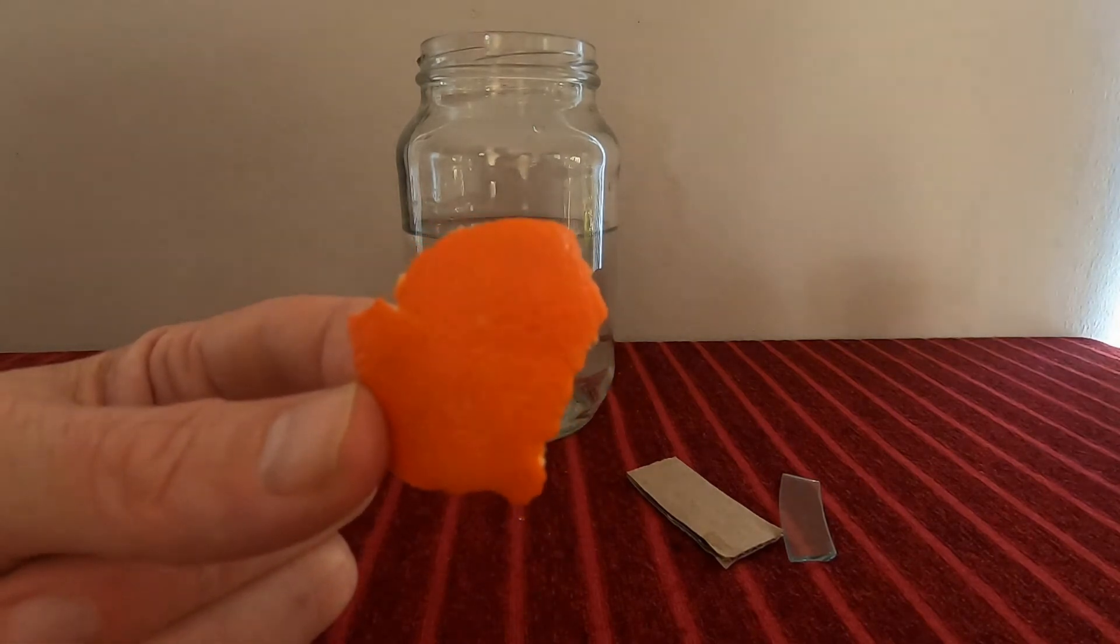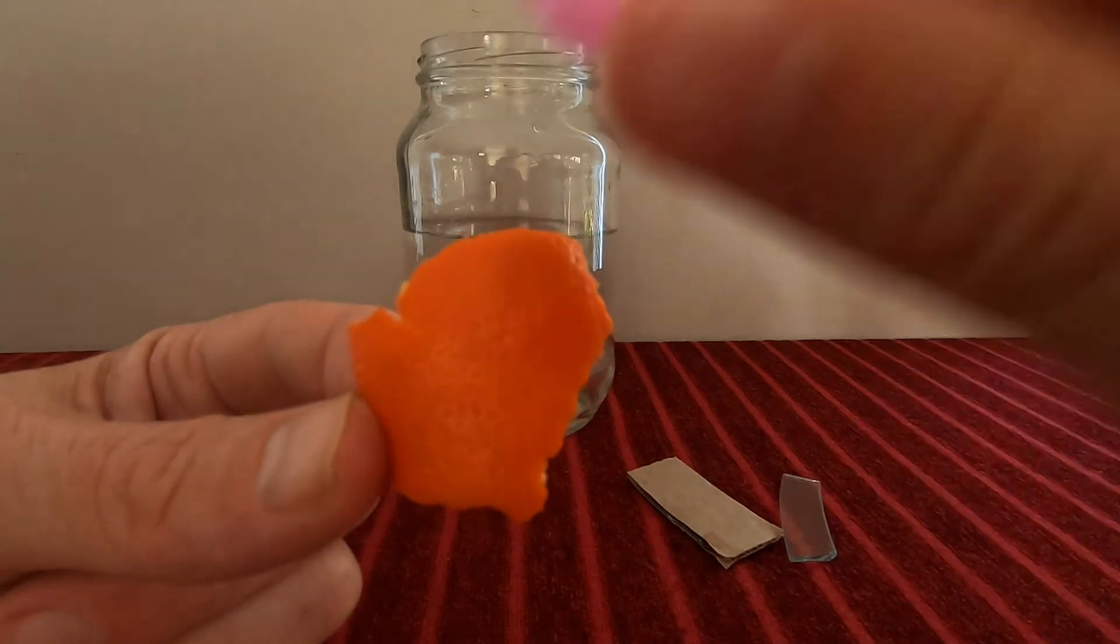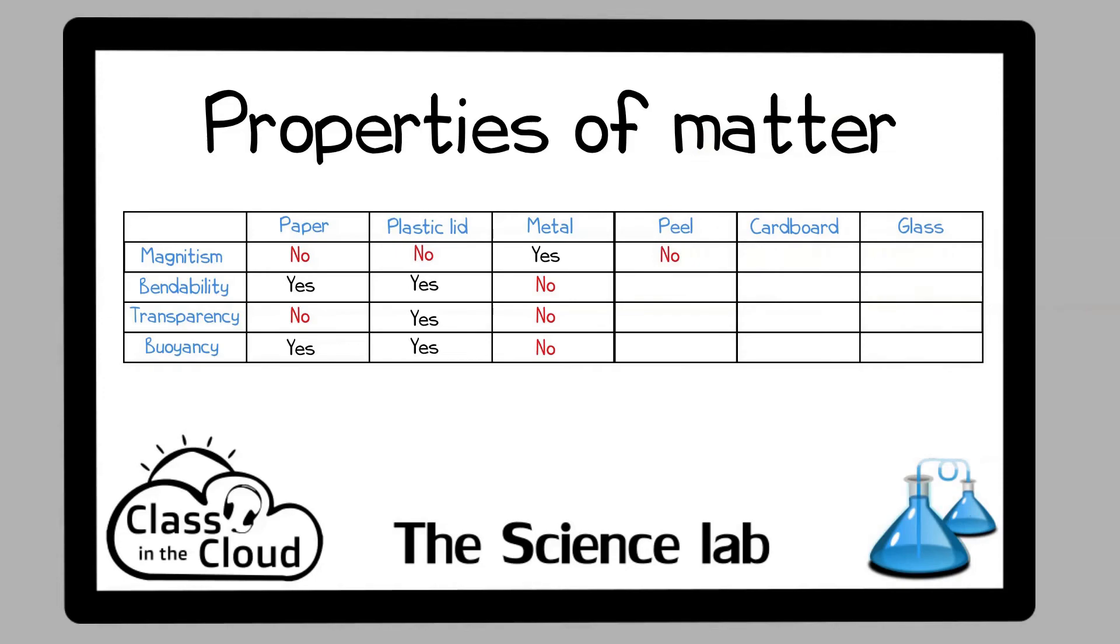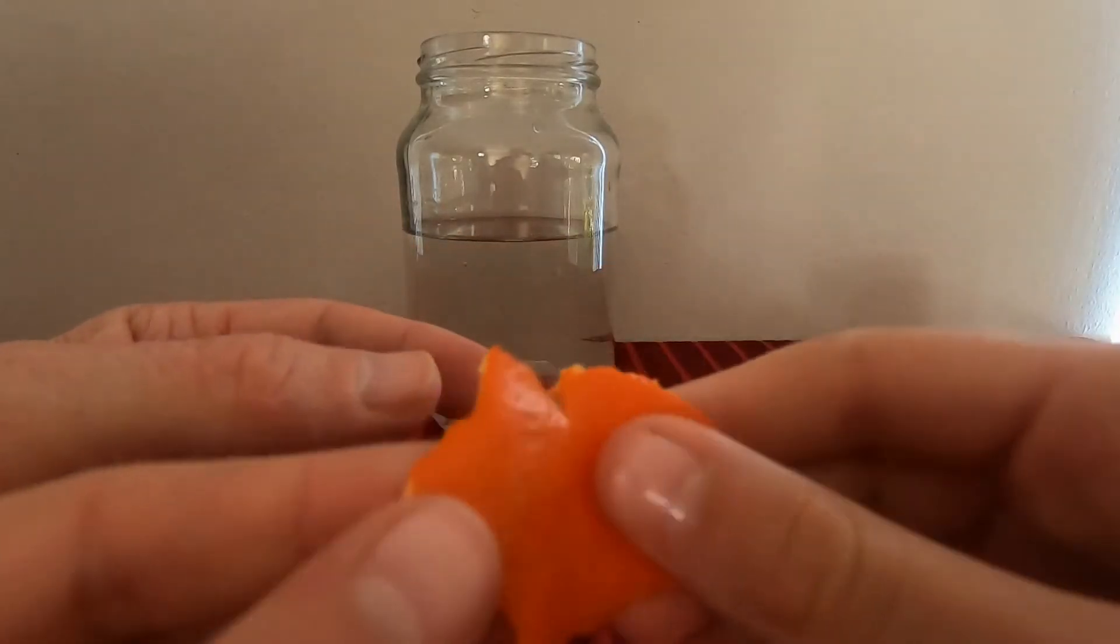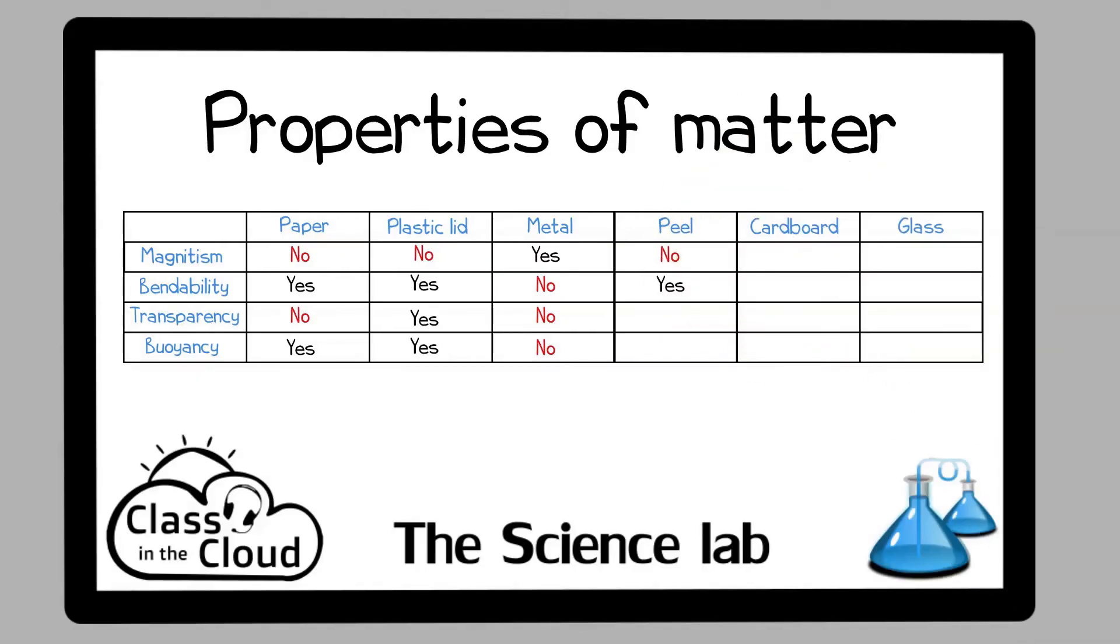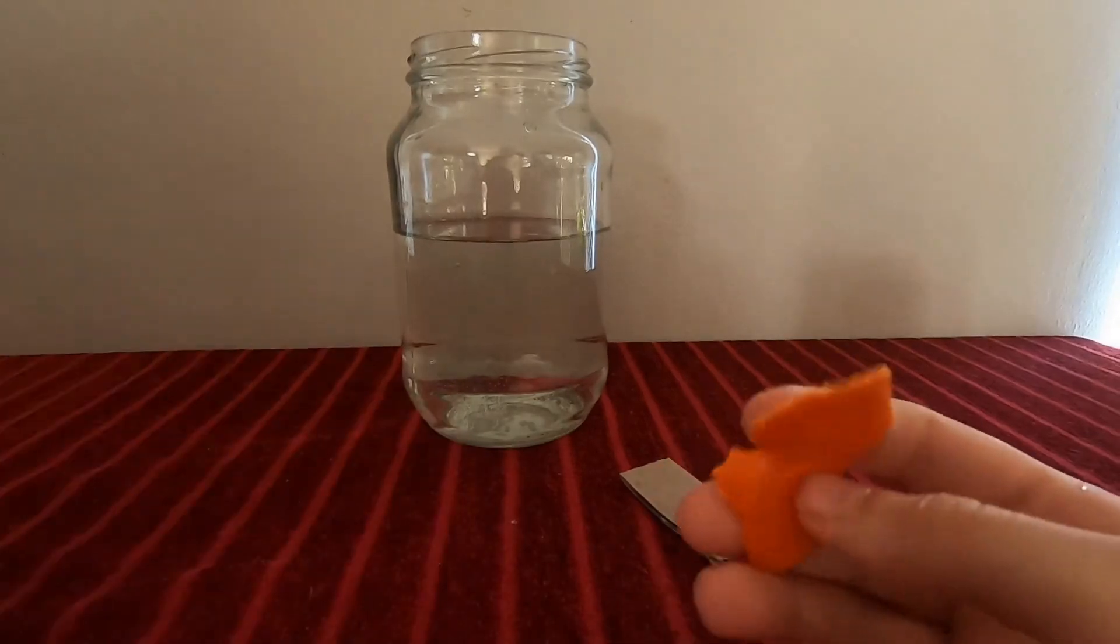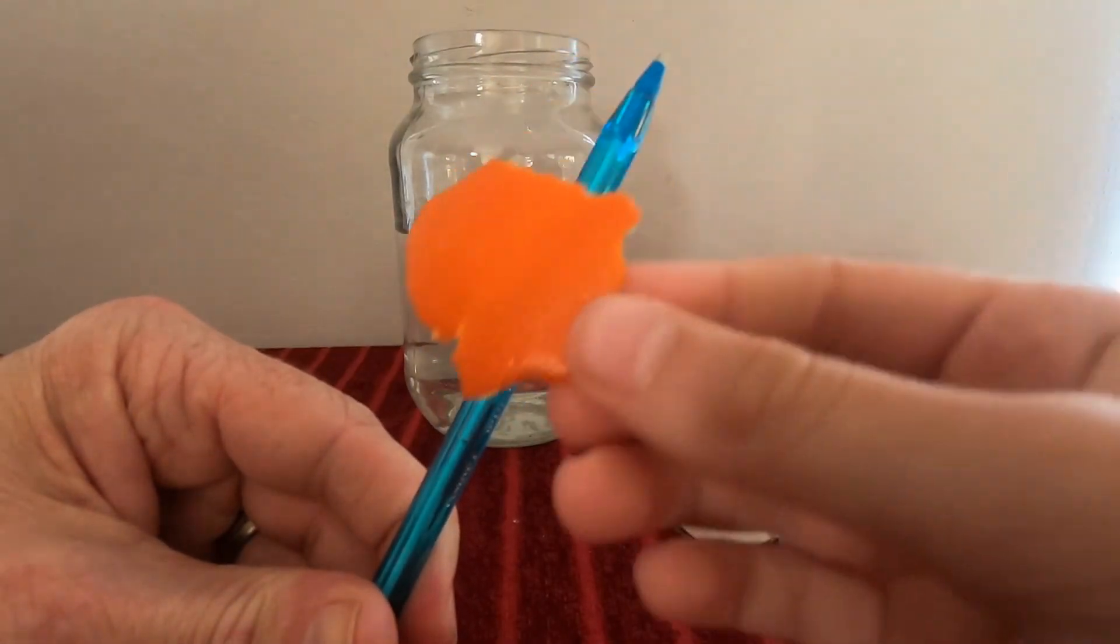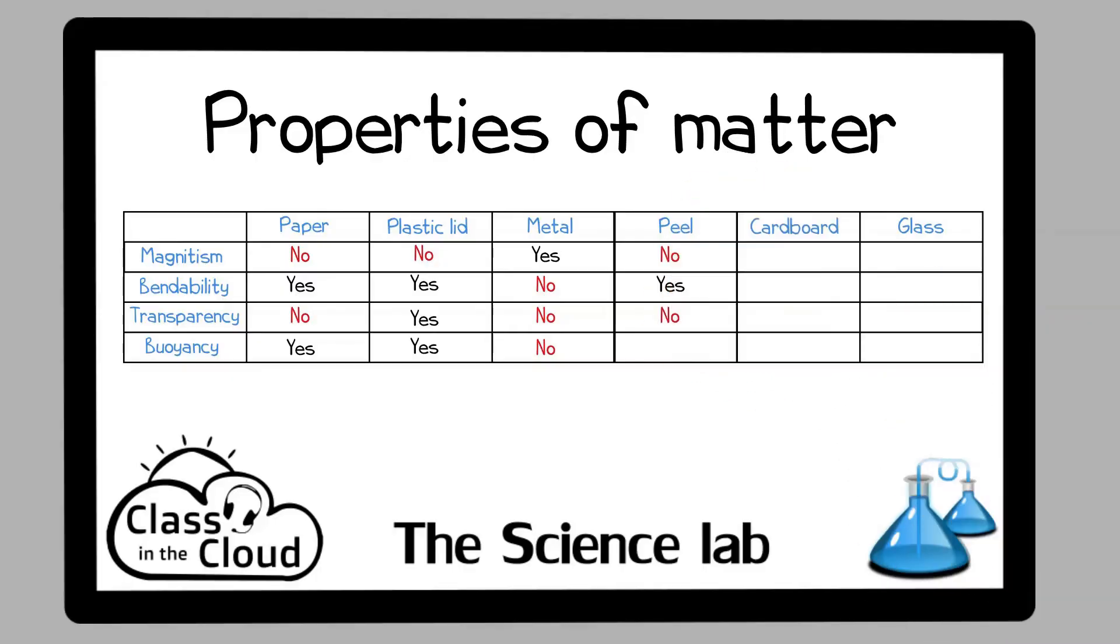Okay, so let's start the experiment. Let's see if it's magnetic. Nope, absolutely not. You think it's bendable? I have a big concern about this. Yep, definitely bendable. Not that stretchy though. Cool. Transparent? Nope, not transparent.